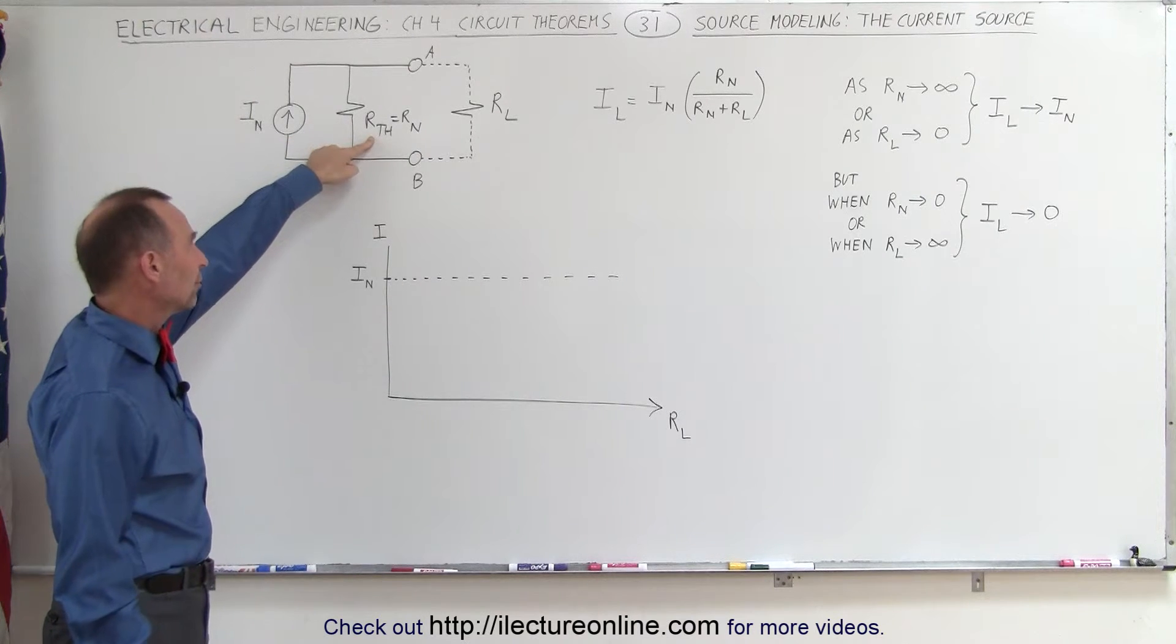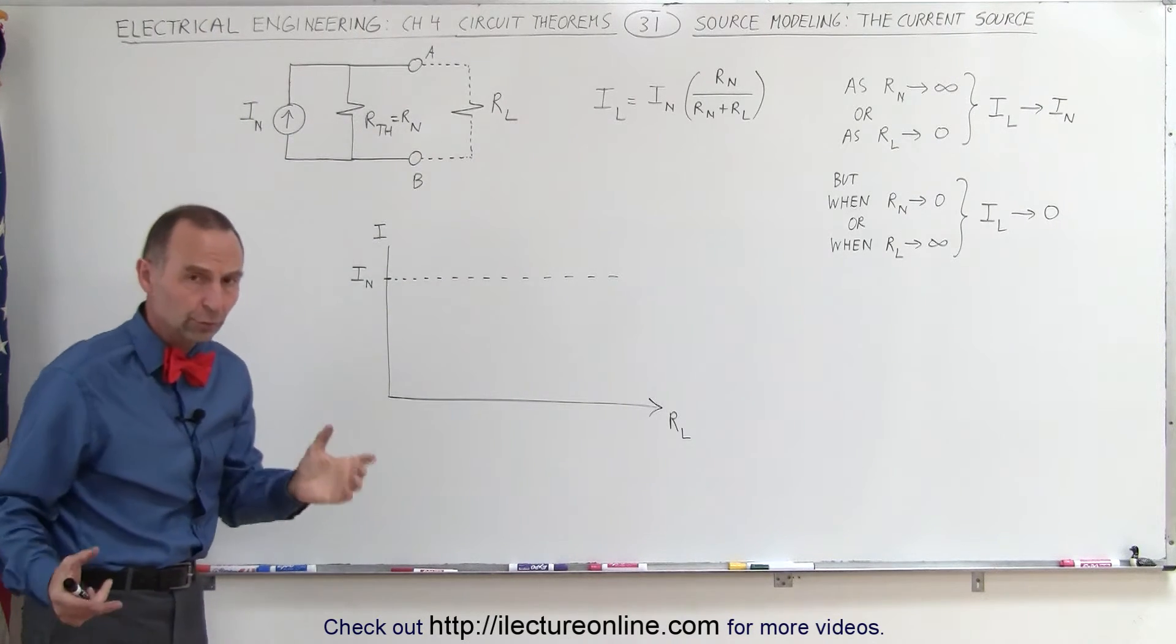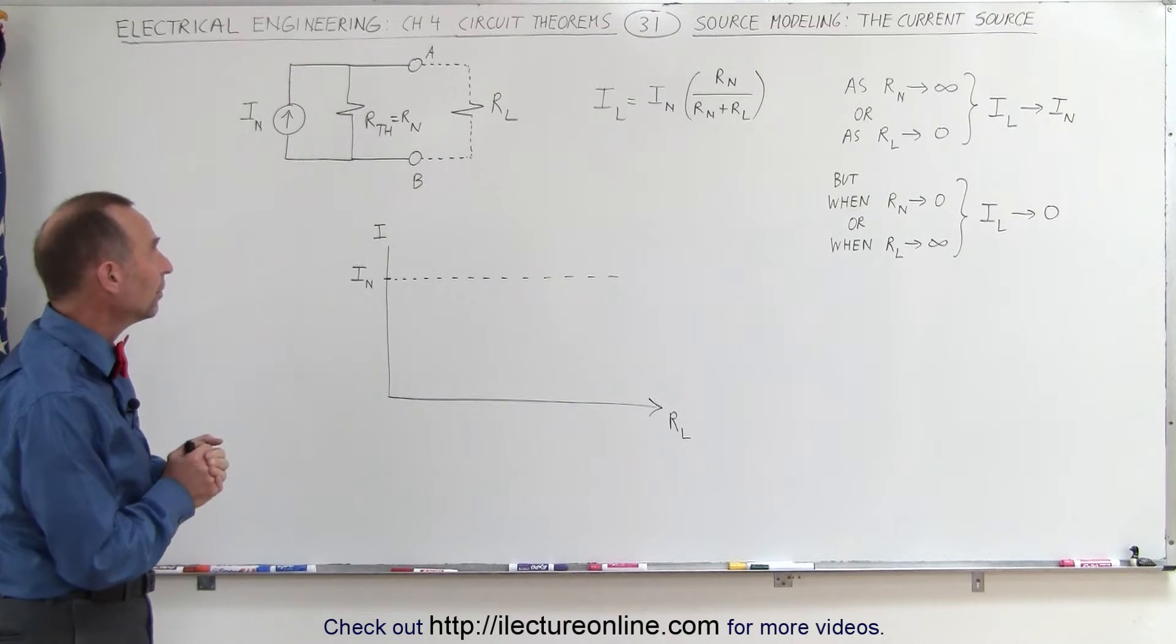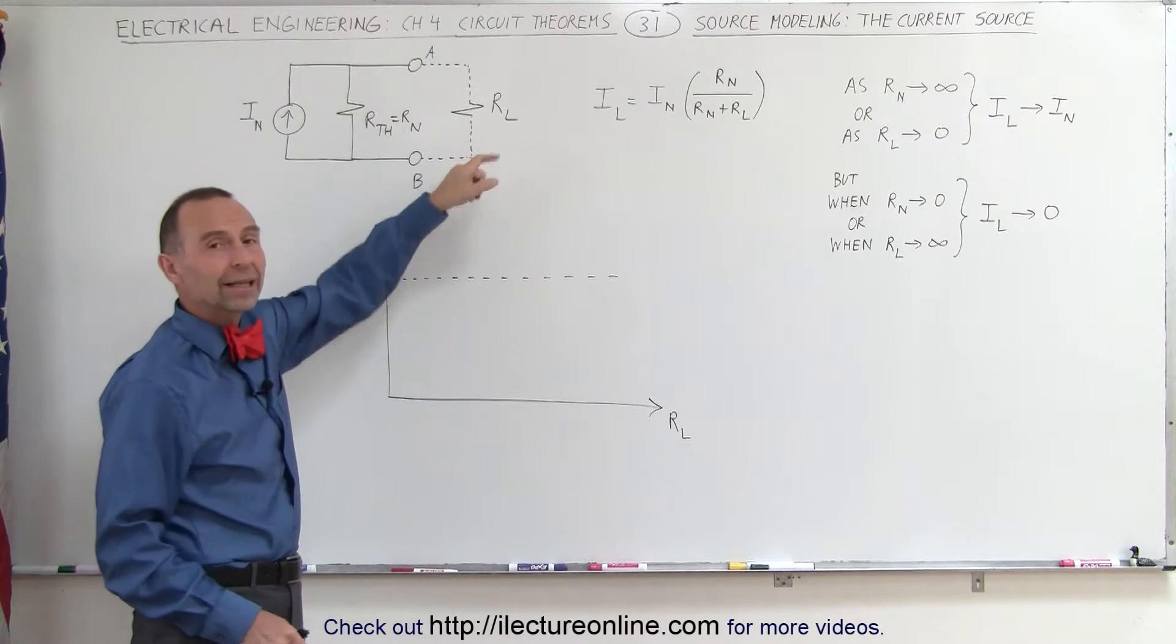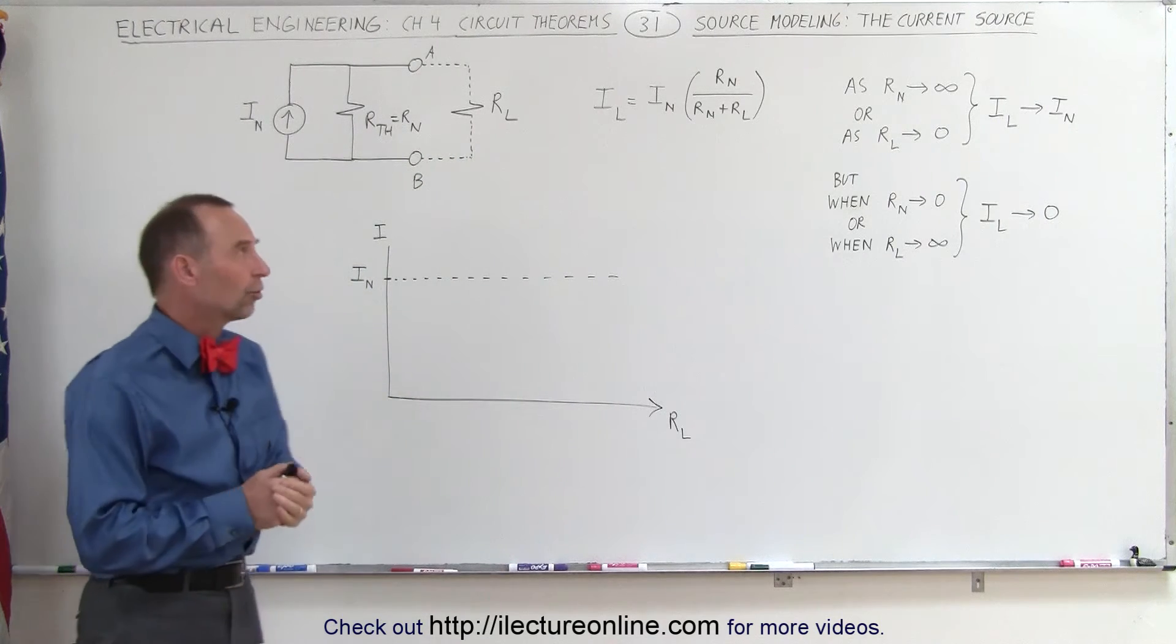That resistor is known as the Thevenin resistance, also known as the Norton resistance. They are equal to one another. And we have terminals A and B, onto which we then attach a load circuit or a load resistor.